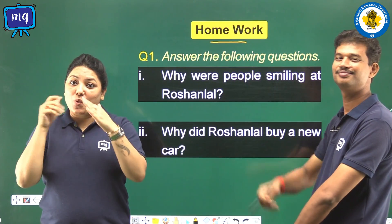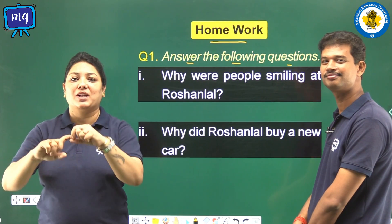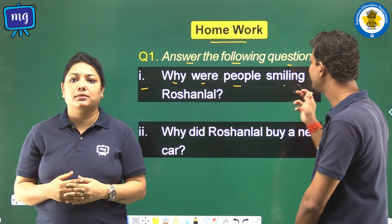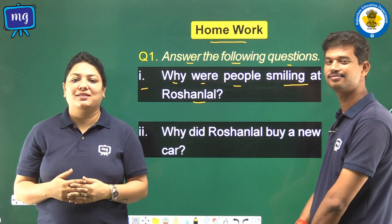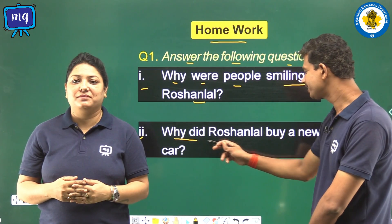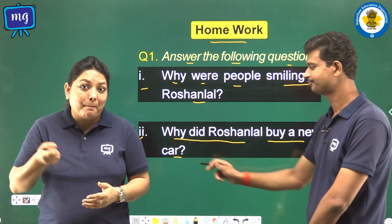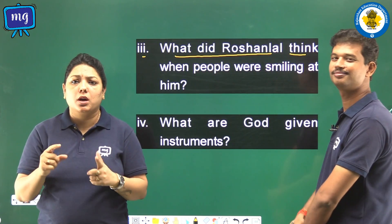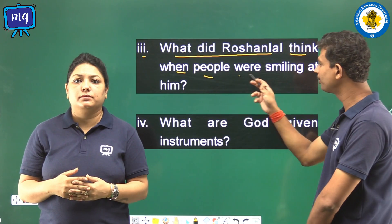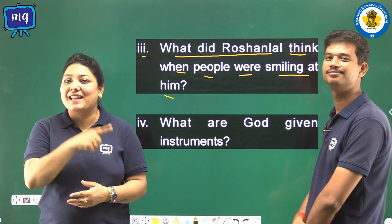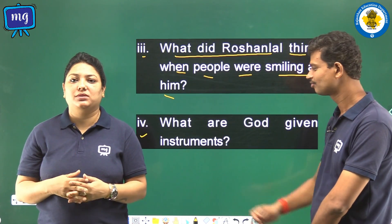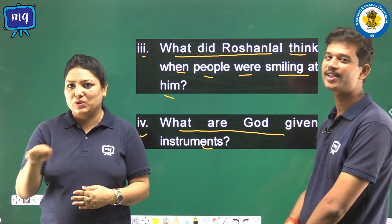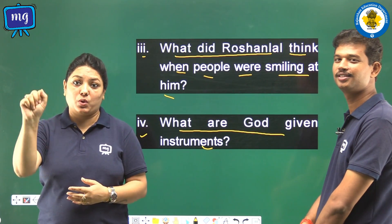Now it is homework time. Answer the following questions. Question 4: First, why were people smiling at Rosenlal? Second, why did Rosenlal buy a new car? Question 5: What did Rosenlal think when people were smiling at him? Fourth, what are God given instruments? Children, these are the questions you have to answer at home.